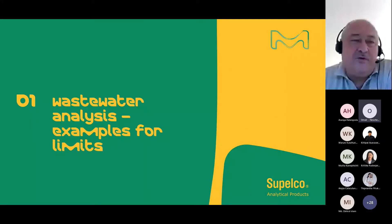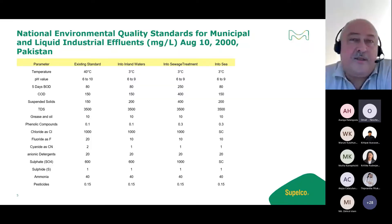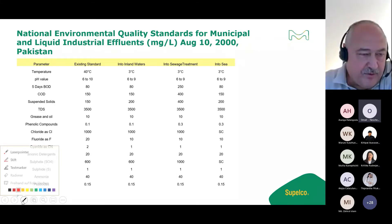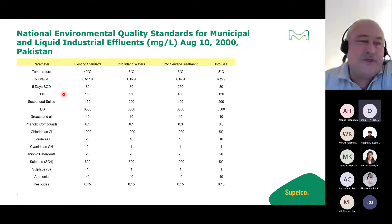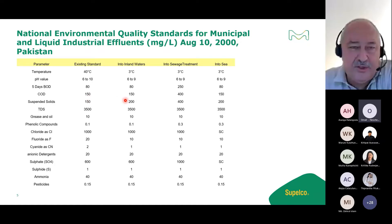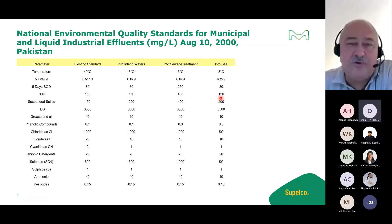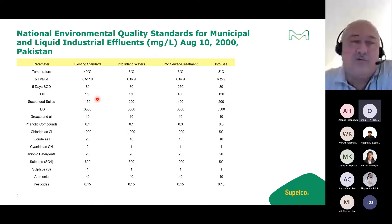Let's look at wastewater analysis. I've chosen examples from Pakistan, as we're in Southeast Asia. For a critical parameter like COD, the existing standard is 150 mg/L when discharging into inland water. When discharging into a sewage treatment plant, the limit can extend to 400 mg/L, and when discharging to sea it's 150 mg/L. So the regulation depends on where you discharge.